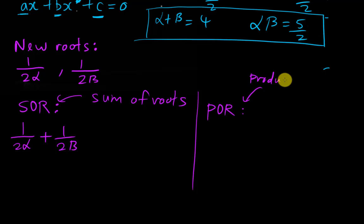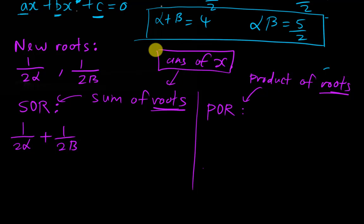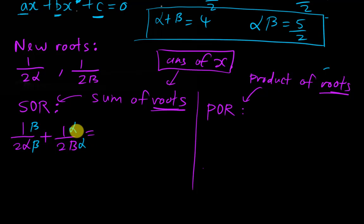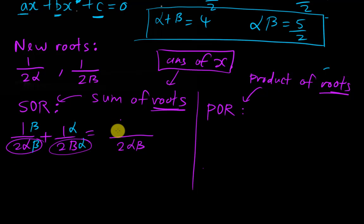Product means multiply. Root just means the answer of x. To add 1/(2α) + 1/(2β), both fractions must have the same denominator. I multiply the first term by beta over beta and the second by alpha over alpha, so the denominator becomes 2 alpha beta for both terms. The numerator becomes beta plus alpha.